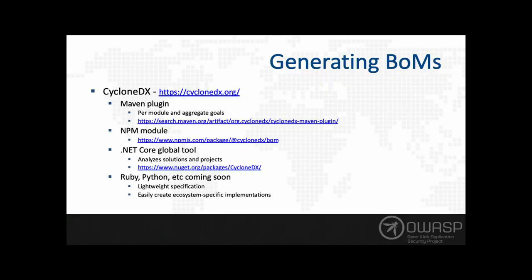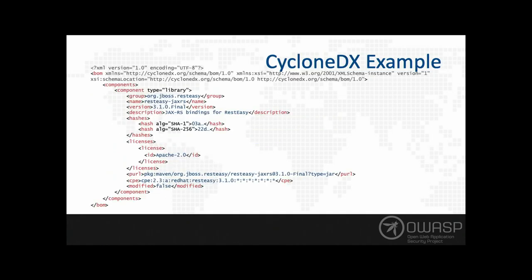Although not a bill of materials, we can also ingest Dependency Check reports. Generating a BOM is really simple — you start with something native to your ecosystem: Maven, NPM, there's a .NET Core module and others in development. The specification is really simple to understand; you could probably create something for Ruby or Python in a few hours and have something of production quality within a day. This is what a bill of materials actually looks like — I only have one component listed here for screen real estate.